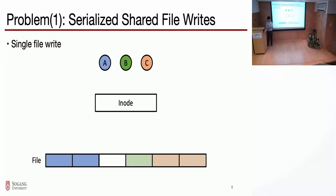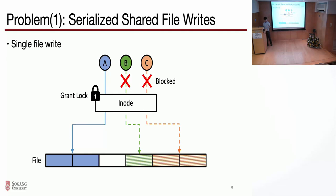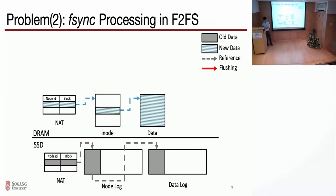The first problem we found from our preliminary research is that writes to a single file are serialized by the inode mutex. When the first thread is trying to write the head region of the file, it will be granted a lock on the inode. Even though the second thread is trying to write a disjoint area, it will be blocked by the inode mutex. This is the first problem we found.